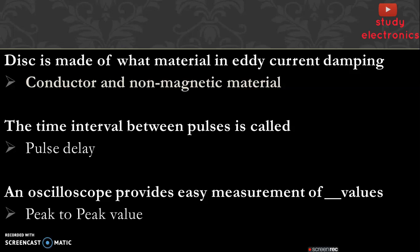Next question: disc is made of what material in eddy current damping? The disc is made up of conductive and non-magnetic material. The time interval between pulses is called pulse delay. An oscilloscope provides easy measurement of peak to peak values.